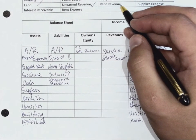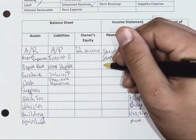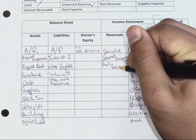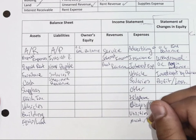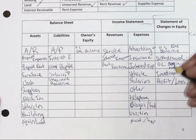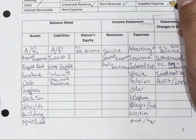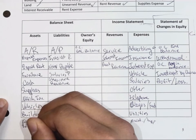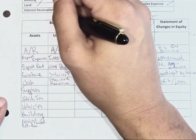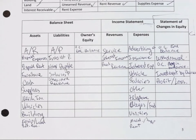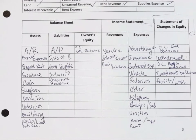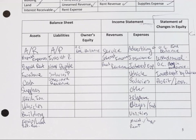Rent revenue — a type of business with a lot of this would be a landlord or real estate business. Supplies expense is an expense. Interest receivable is an asset because you are expecting to receive an interest payment. Rent expense is an expense. And that is the start of learning about the accounts.